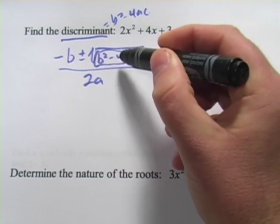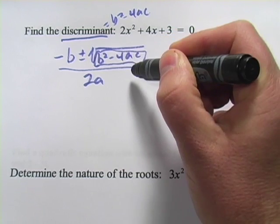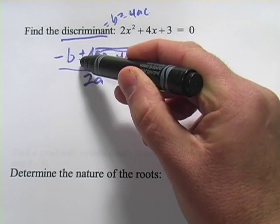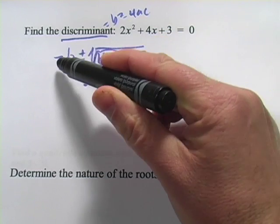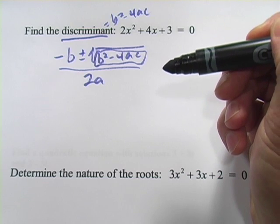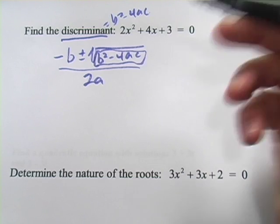Now the other option is it could be zero. If the discriminant comes out to be zero, then you're plus or minus zero. It's really just your one answer is negative b over 2a. So those are the three possibilities.